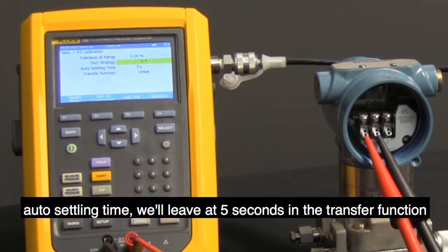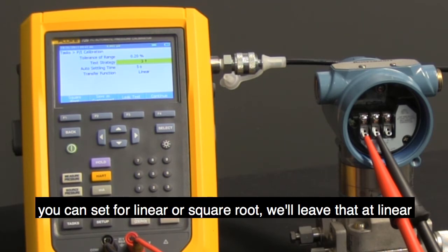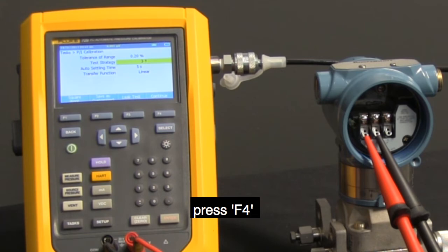Auto Settling Time, we'll leave it at 5 seconds. In the transfer function, you can have set for linear or square root. We'll leave that at linear. Press F4.